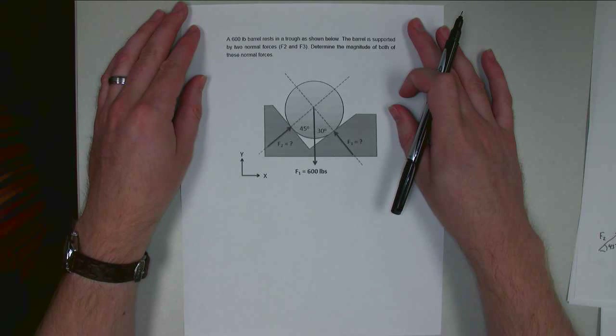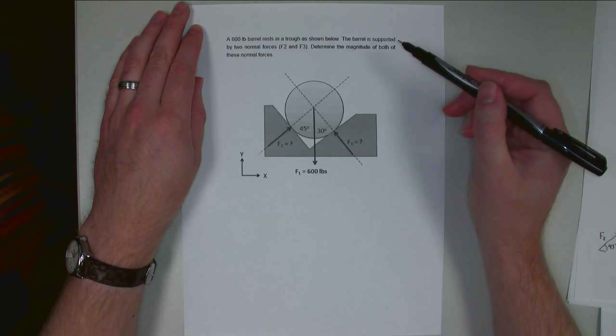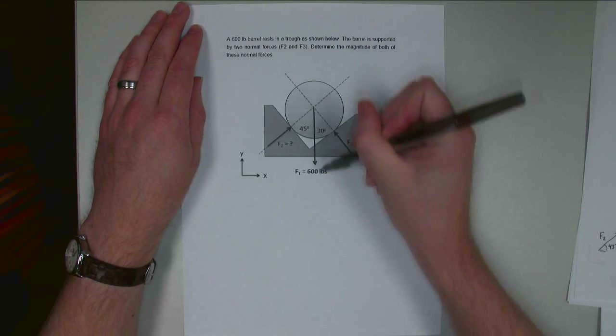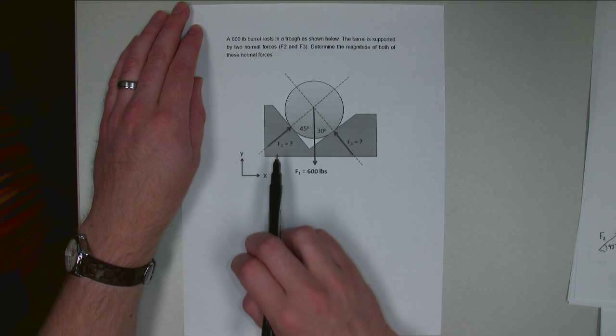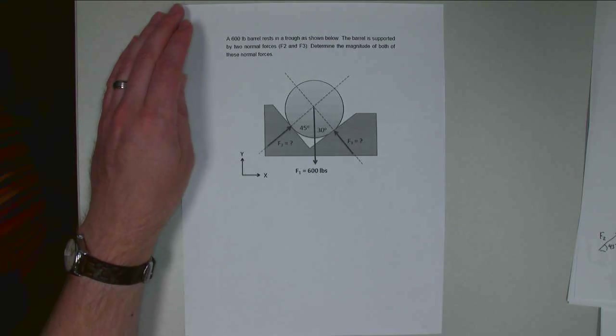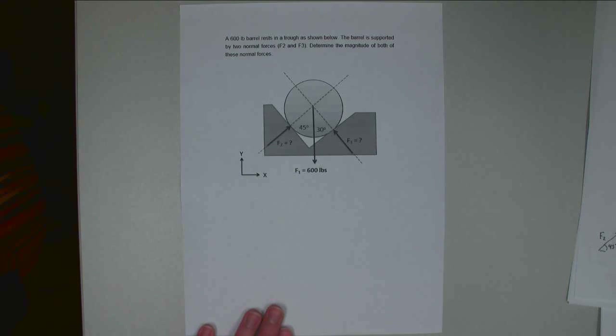Alright, for this problem we have a 600-pound barrel resting in a trough, and we have two normal forces supporting this. So the 600-pound force is acting down through the center, and the normal forces are acting at this edge and this edge here, perpendicular to the surfaces. So each one is at a separate angle, which is going to make things a little more complicated since it's not symmetrical.